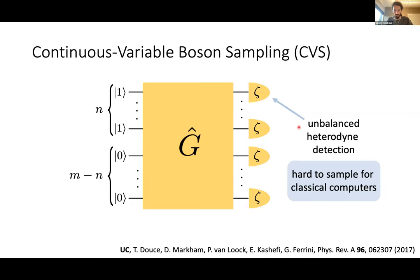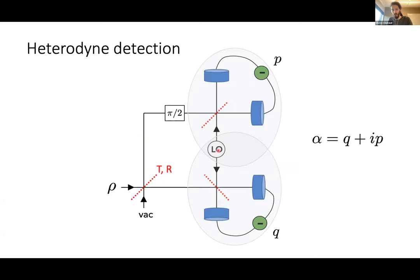Follow-up question: Do we need the same local oscillator for all the heterodynes? No — you need the same local oscillator for the two homodynes within the same heterodyne detection, but for each mode the local oscillator can be different; they can be independent.